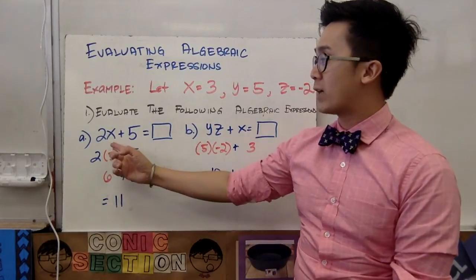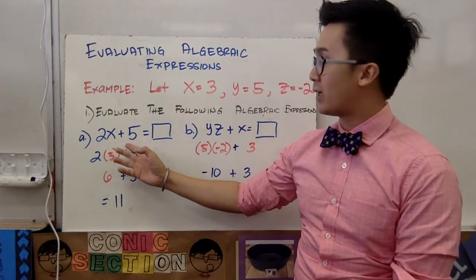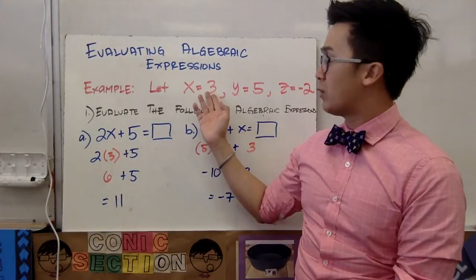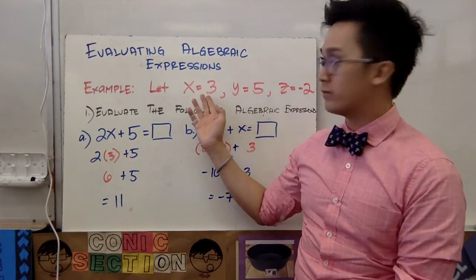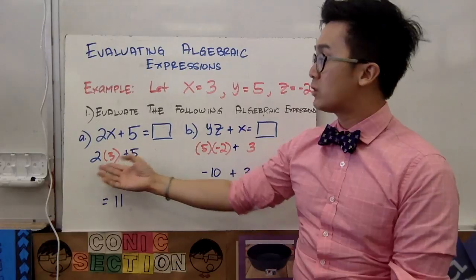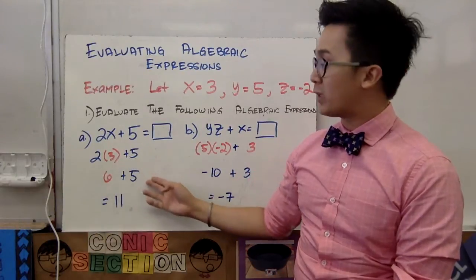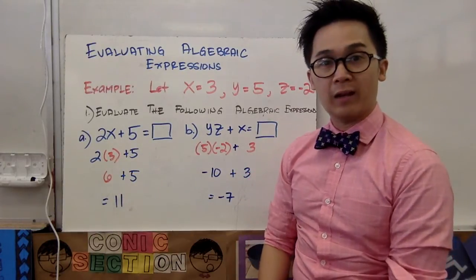On problem number 1, we have 2x plus 5, and we're going to evaluate it. As x is equal to 3, we're just substituting the value of x to our expressions, so we'll have 2 times 3 plus 5, which when we simplify will be equal to 11.